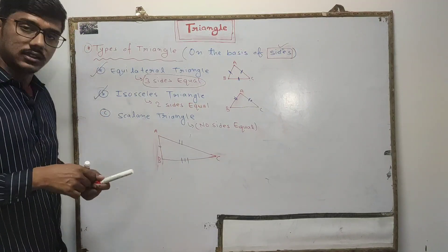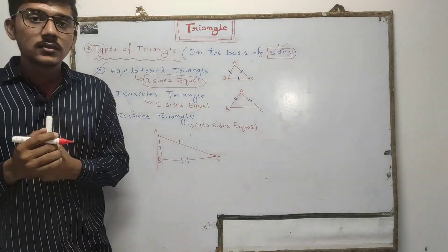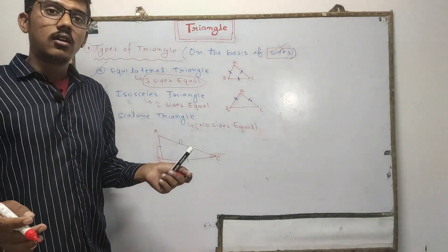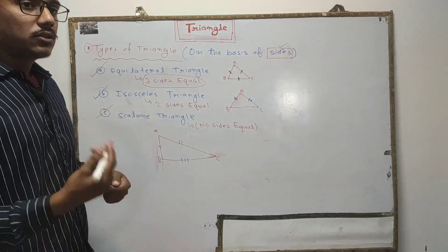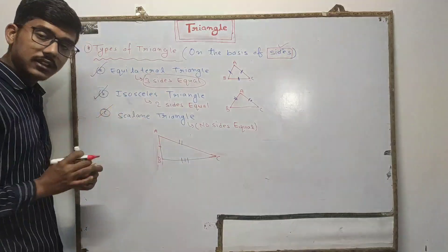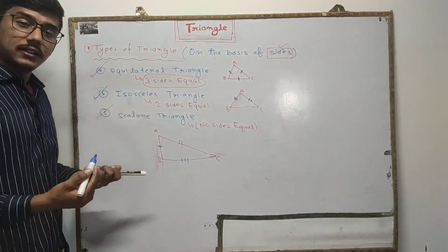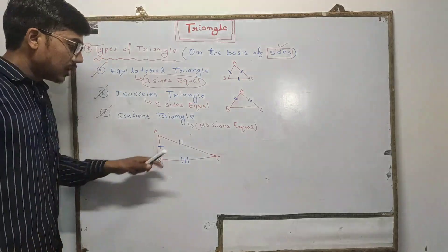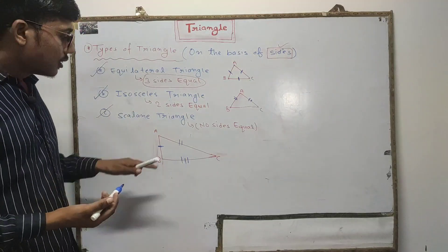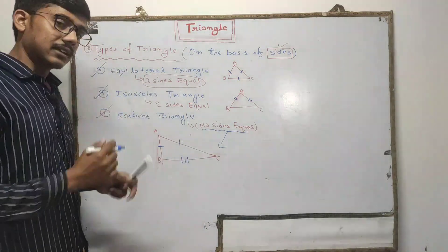The third type is a scalene triangle. In a scalene triangle, no sides are equal — all sides are of different length. In this figure, you can see three sides of different length. So a triangle in which no sides are equal is known as a scalene triangle.